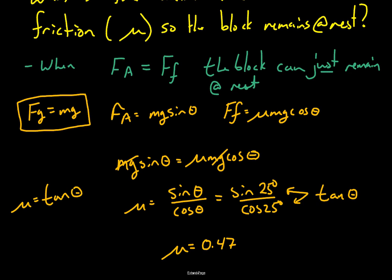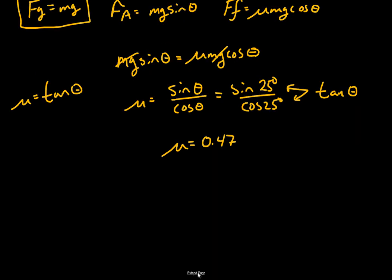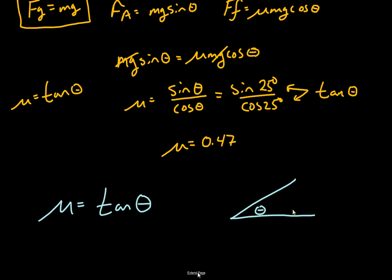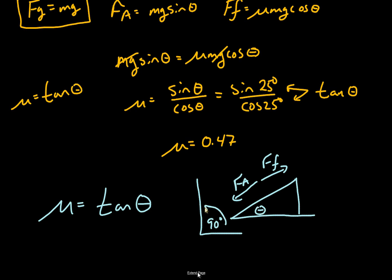So let's review what that means. For a given angle, whatever that angle happens to be, the minimum mu value such that the force of friction will be equal and opposite to the accelerating force is simply tan theta. Obviously if you're at a 90 degree angle there is no normal force, and the math gives you an unusable value. If you remember what your tan graph looks like, that should make sense because it's an asymptotic value upon approaching 90 degrees.